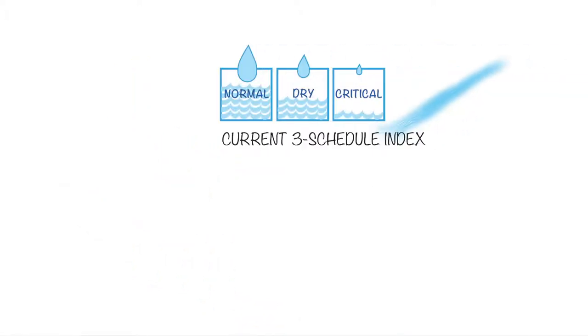The current hydrologic index includes three flow schedules, which determine how much water is released from the lake and is based on the amount of water stored in Lake Pillsbury in the Eel River watershed.